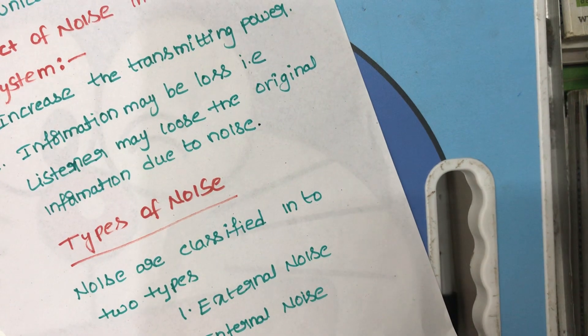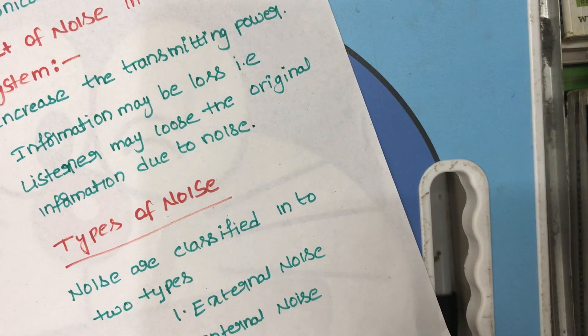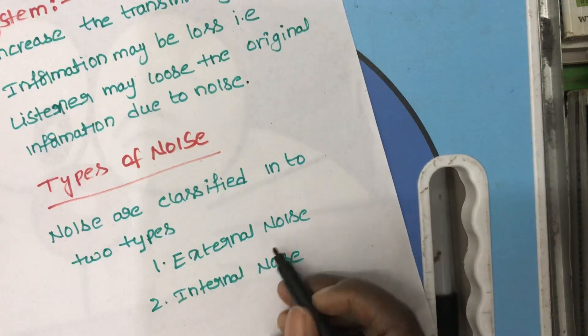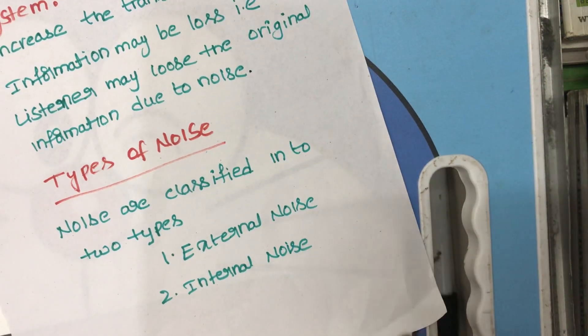Next we will see the types of noise. Noise are classified into two types: external noise and internal noise.